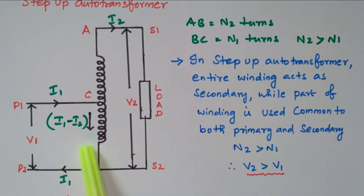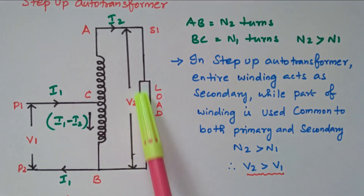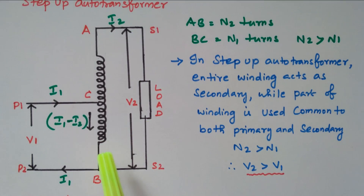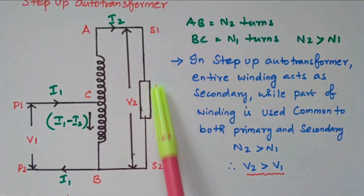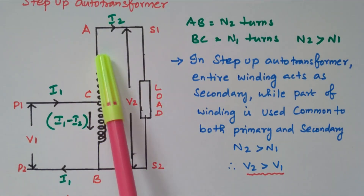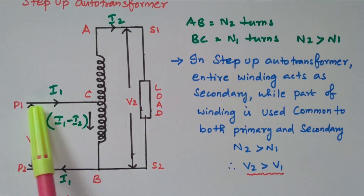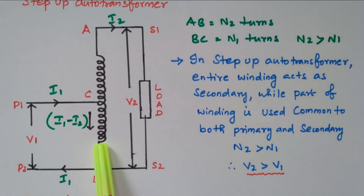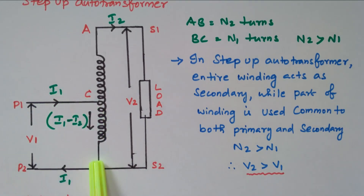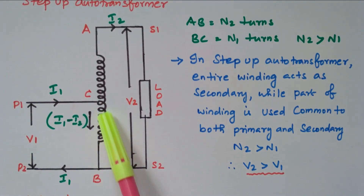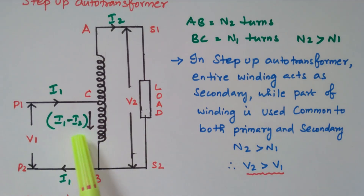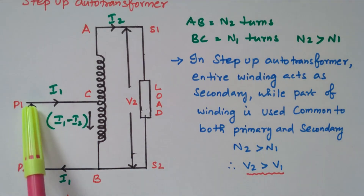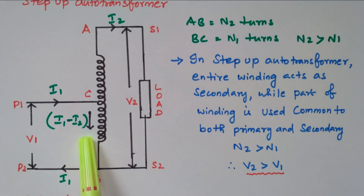V1 is applied to the primary winding and V2 is available across the secondary load winding. For current: I2 flows through the entire secondary winding, and I1 flows in the primary. In the common section BC, I2 flows upward while I1 flows downward, so the difference I1 minus I2 flows in the common section BC.